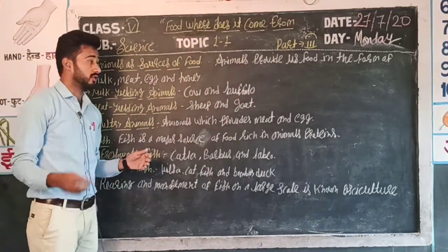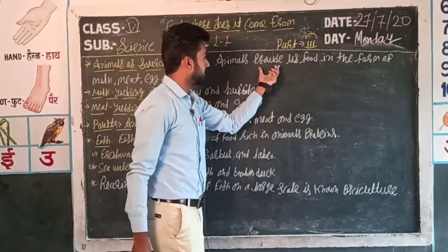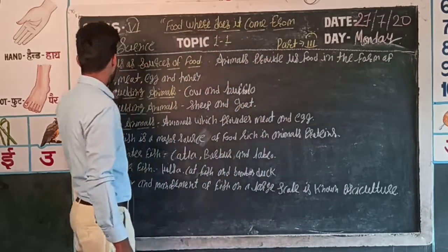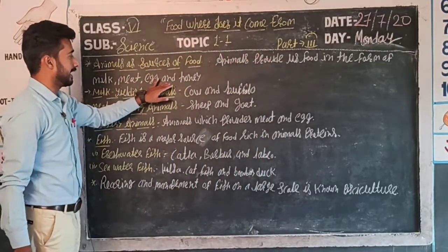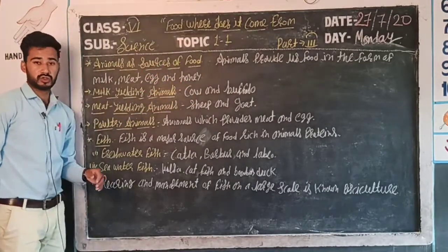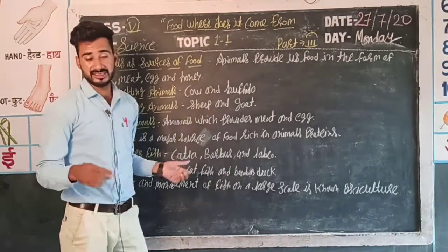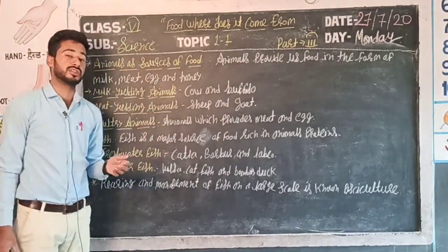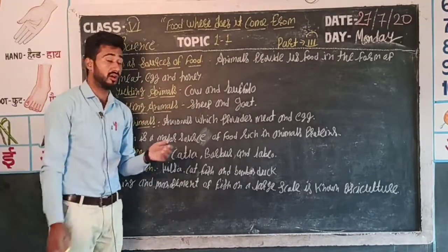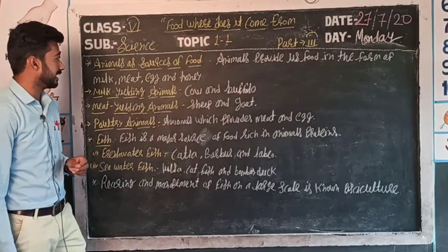The animals which we use as a source of food - animals provide food in the form of milk, meat, egg, and honey. That is why we call them animals as a source of food. Those animals which provide milk, meat, egg, and honey are called source of food animals.